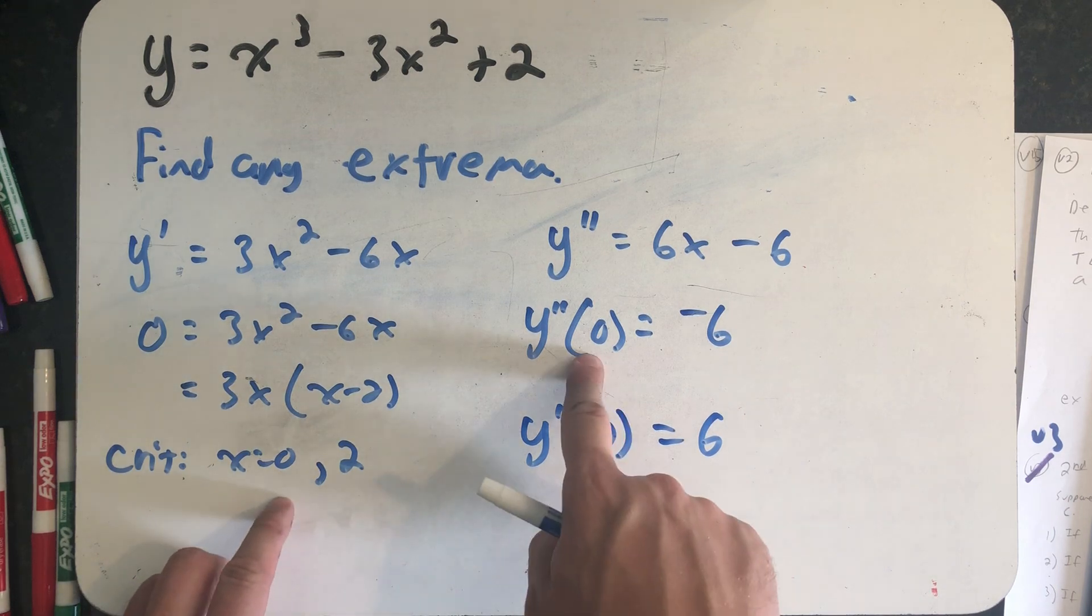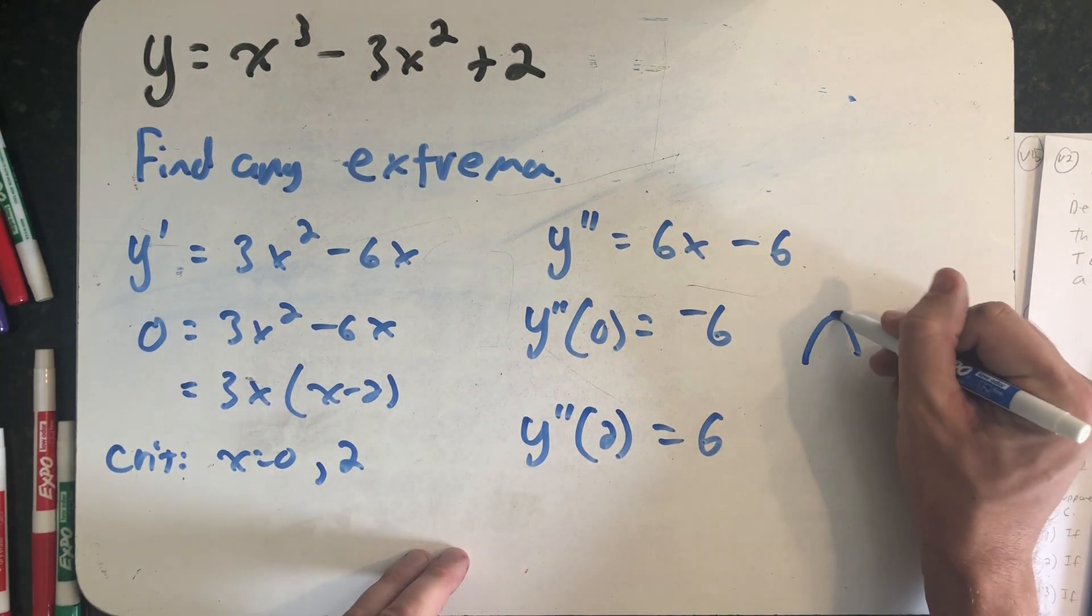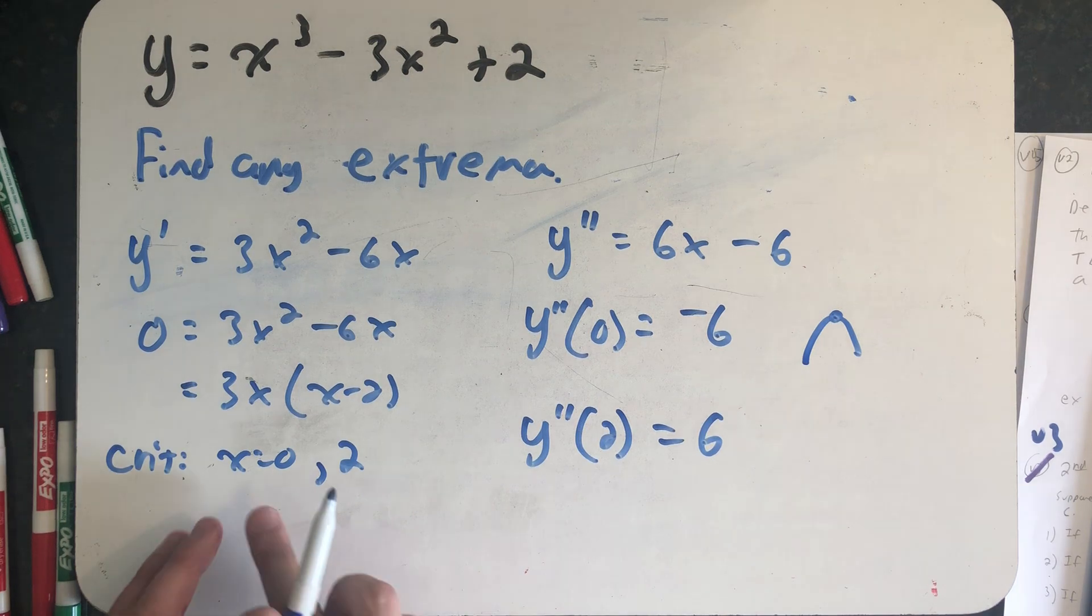At the critical point 0, I get that concave down shape, which means at x = 0, I have a local max.